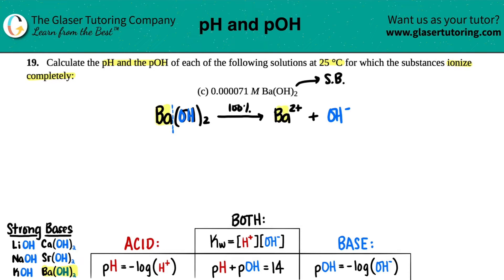But now we just have to make sure that we're balancing the equation. We had one barium, one barium. But now I have two hydroxides on my left side, but I only have one here. What number am I going to put in the front here? Yeah, a two. Now we're all balanced and we're ready to go.